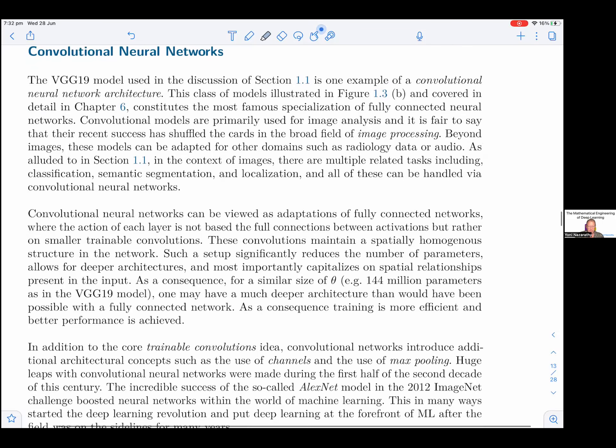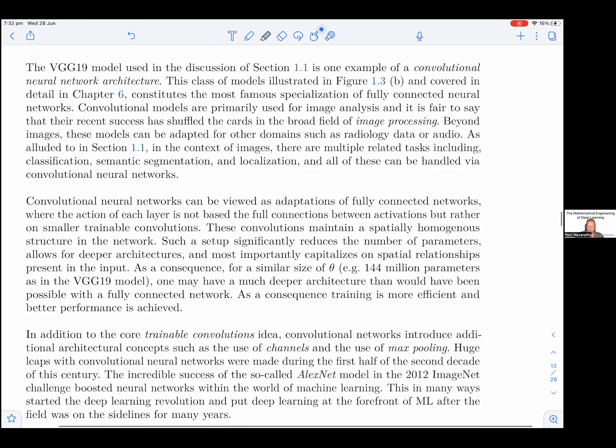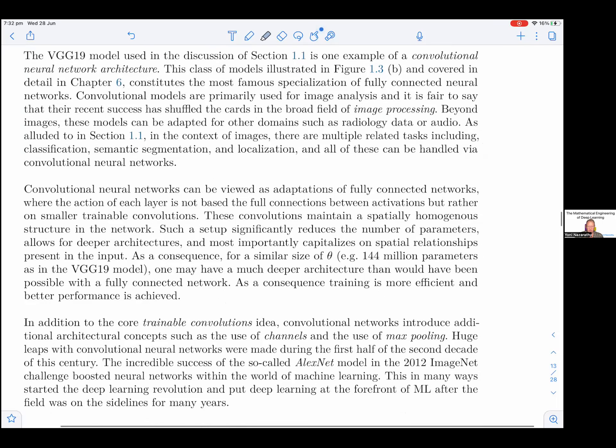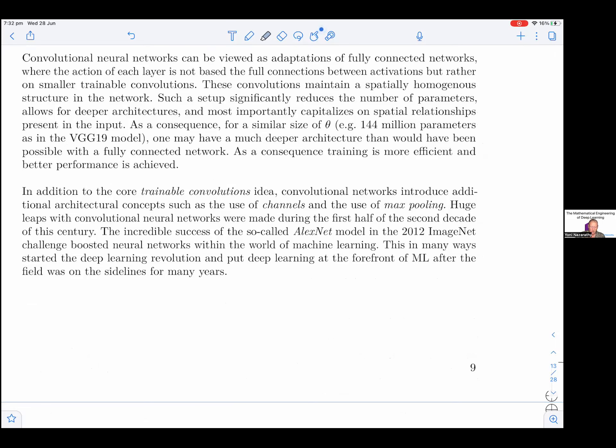Convolutional neural networks can be viewed as adaptations of fully connected networks, where the action of each layer is not based on the full connections between activations, but rather on smaller trainable convolutions. These convolutions maintain a spatially homogeneous structure in the network. Such a setup significantly reduces the number of parameters, allows for deeper architectures, and most importantly capitalizes on spatial relationships present in the input.